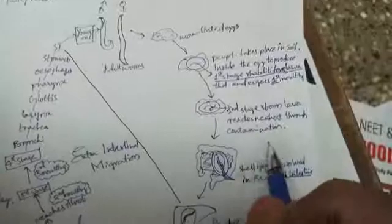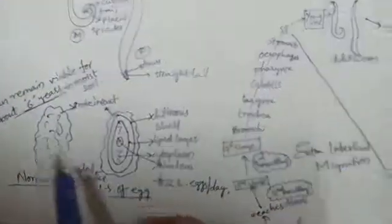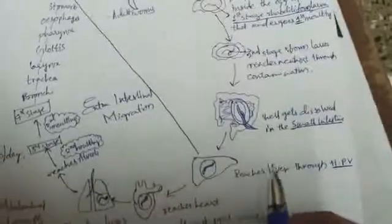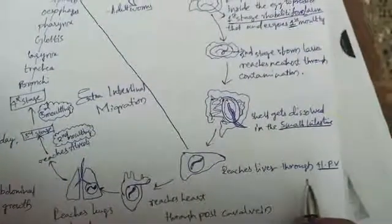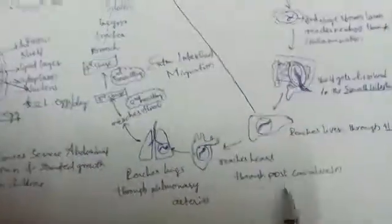The larva reaches a new host through contamination, like food contamination or water contamination. The shell gets dissolved in the small intestine and reaches the liver through the hepatic portal vein.